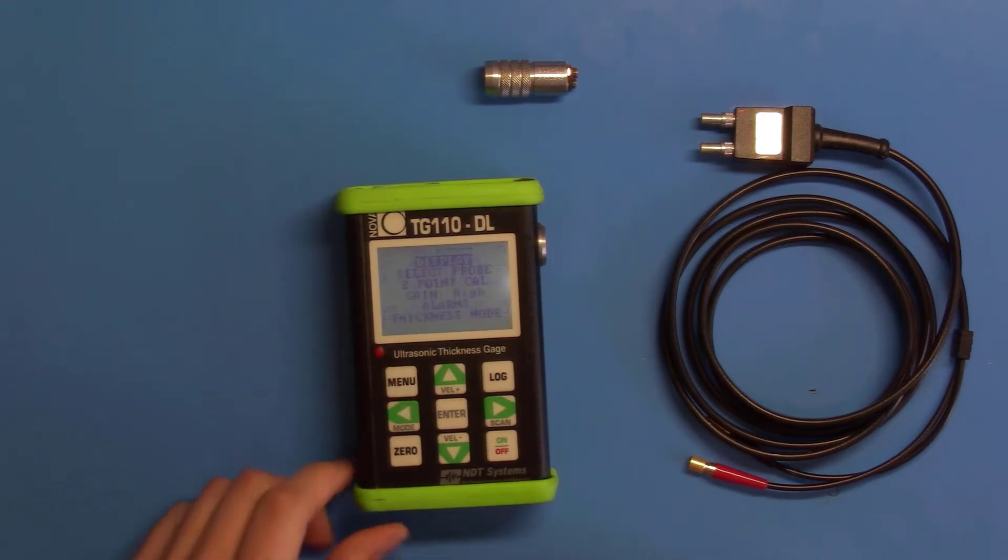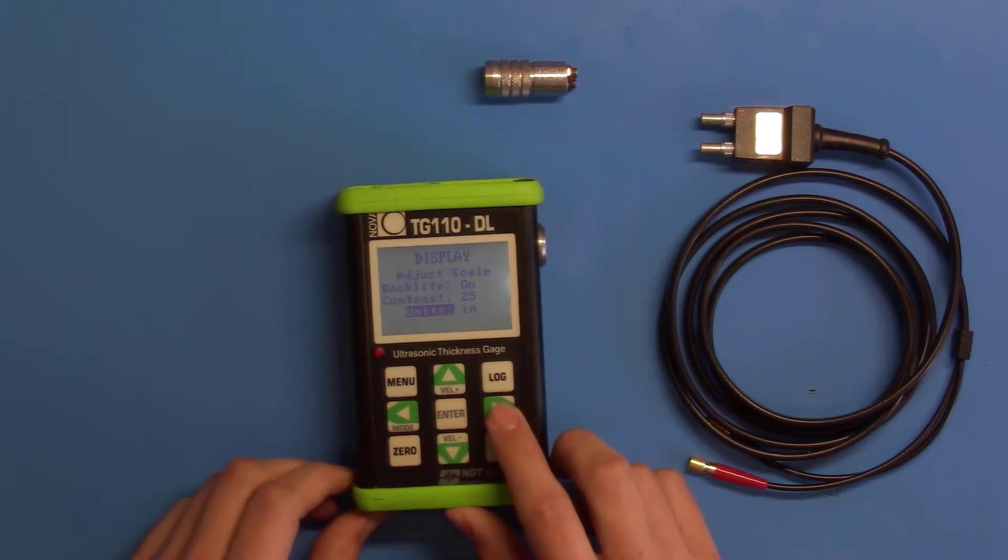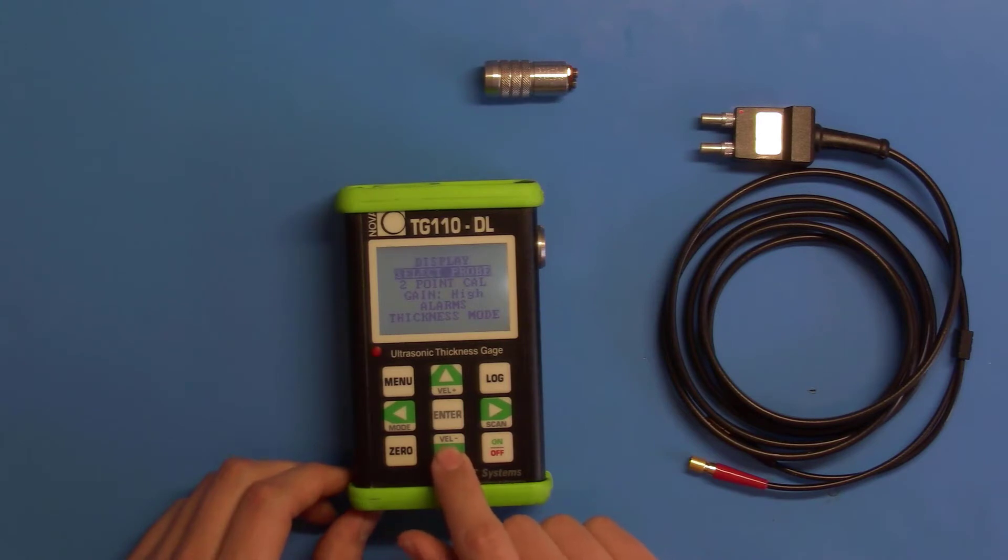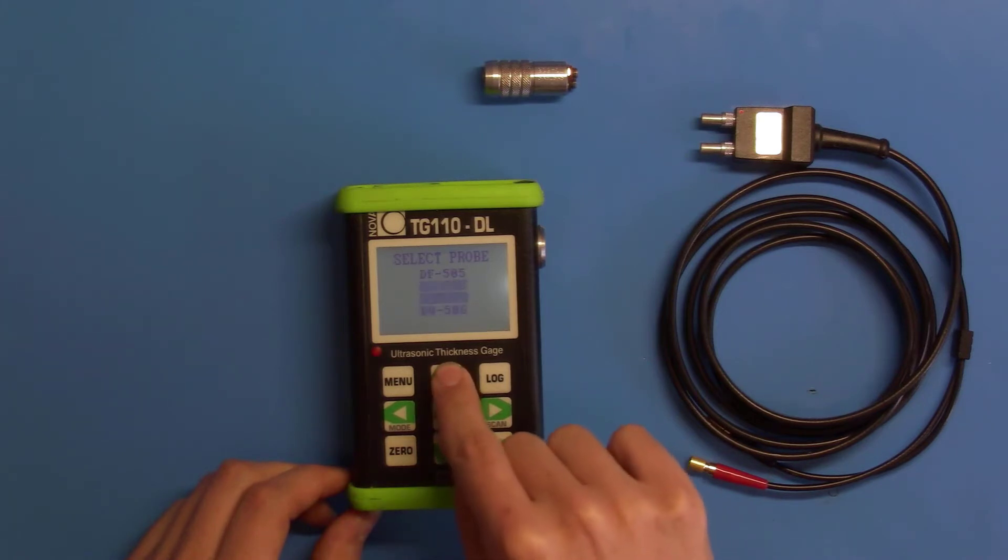Press the menu key, push enter on display, scroll down to units, and select whichever one your application requires. We're in inches, but millimeters are available. To go back, push menu, scroll down to select probe, push enter. We can select any probe profile in this list, but we'll just use auto.